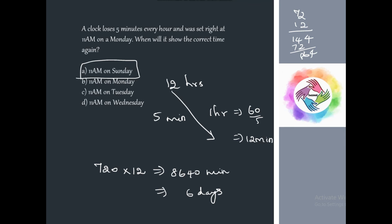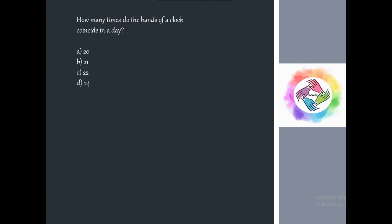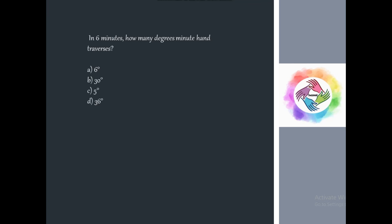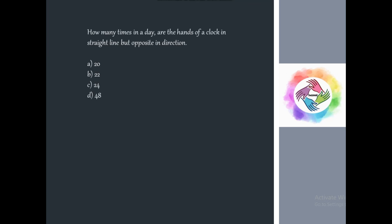How many times do the hands of a clock coincide in a day? As established earlier, the answer is 22 times. In 6 minutes, how many degrees does the minute hand travel? 6 × 6 = 36 degrees. How many times in a day are the hands of a clock in a straight line but opposite to each other? That is 180 degrees, and the answer is 22 times in a day.